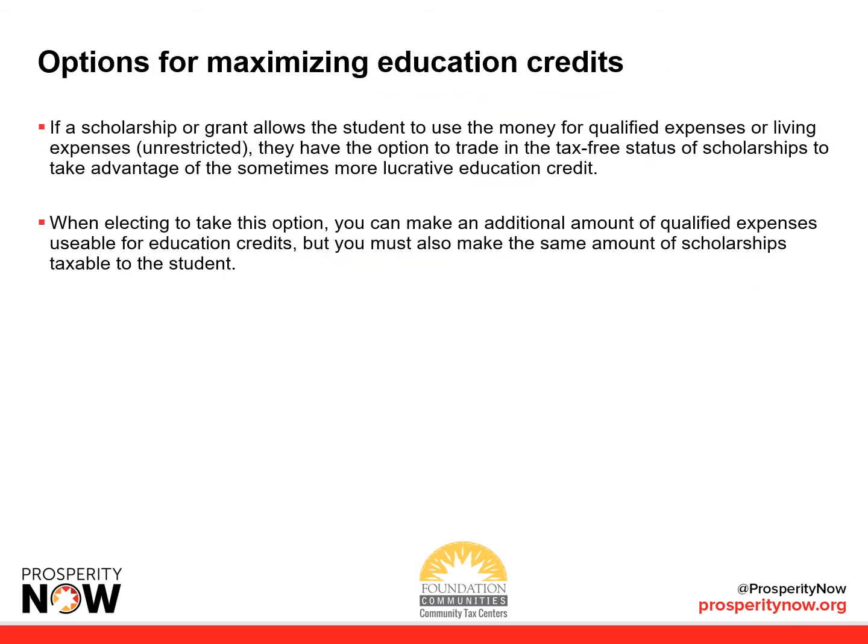If a scholarship or grant allows the student to use the money for qualified expenses or living expenses, they have the option to trade in the tax-free status of scholarships to take advantage of the sometimes more lucrative education credit. When electing to take this option, you can make an additional amount of qualified expenses usable for education credits, but you must also make the same amount of scholarships taxable to the student.